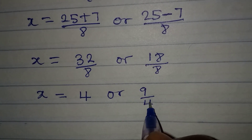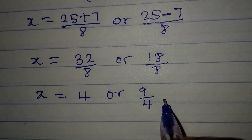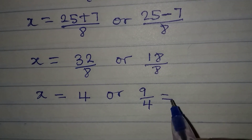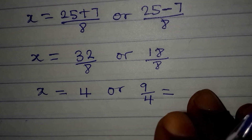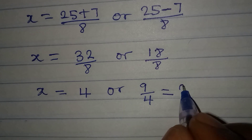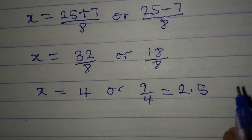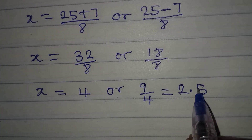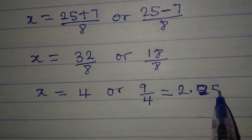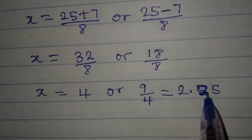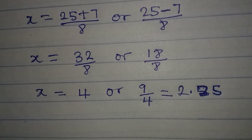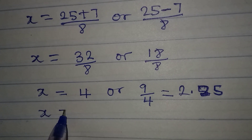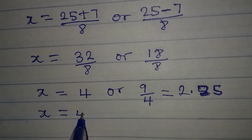9 over 4 as a decimal is 2.25. So our two candidate solutions are x equals 4 or x equals 2.25.